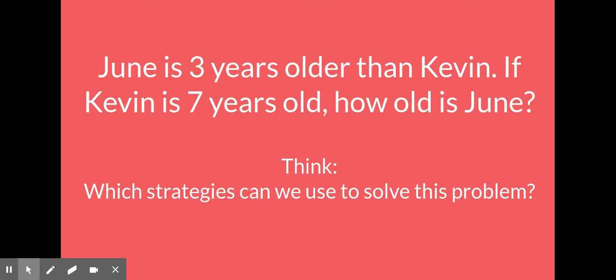Here is a number story, and I will read it to you in just a moment, but I want you to think of a strategy you can use to solve the problem. I'm not going to ask you for the answer, but I want you to tell me which strategy you could use. June is three years older than Kevin. If Kevin is seven years old, how old is June? Write down a strategy that you could use to solve the problem.